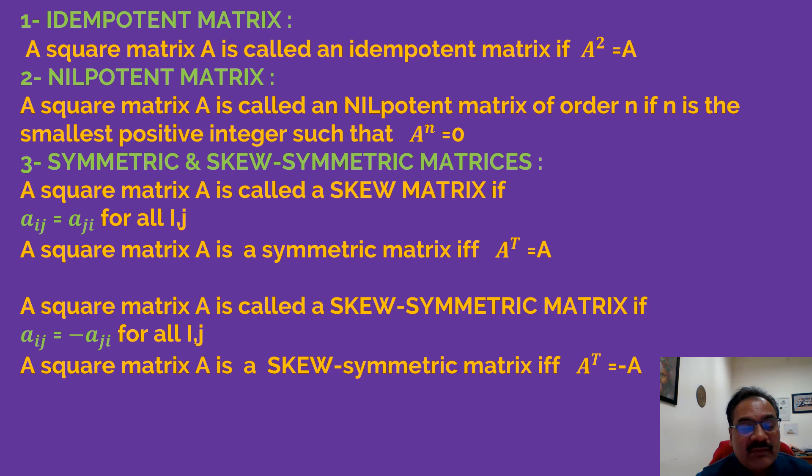But what is the definition of skew-symmetric matrices? A square matrix A is called a skew-symmetric matrix if a_ij = -a_ji for every i and j. A square matrix A is a skew-symmetric matrix if and only if A^T = -A. So then in this case we call this a skew-symmetric matrix.